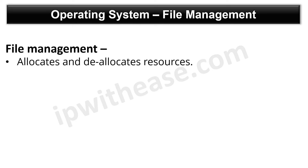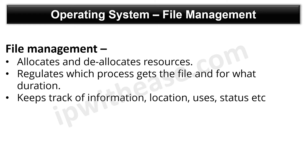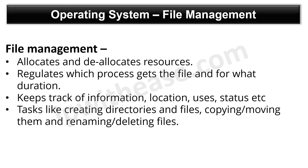Second in the list is file management. The operating system allocates and de-allocates resources. It regulates which process gets the file and for what duration. It also keeps track of information, location, uses and status, etc. These collective facilities are often known as the file system. The OS also performs tasks like creating directories and files, copying or moving them, and renaming or deleting them.